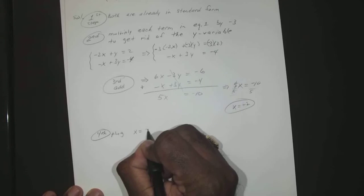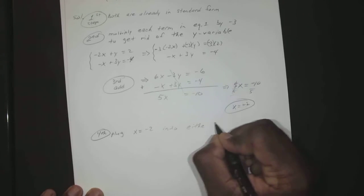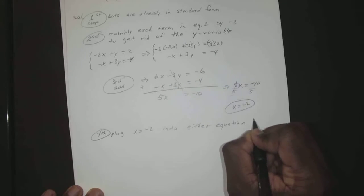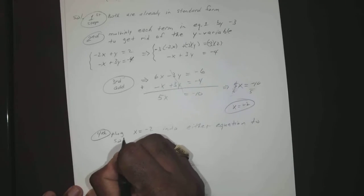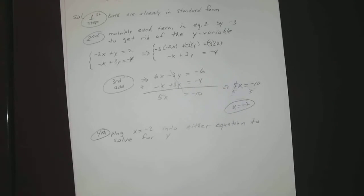So plug x = -2 into either equation to solve for y. And that has to be the original too, it can't go into the 6x, it has to move into the -x. Oh, if you want to plug it into the 6x you could, we just make it a larger number.